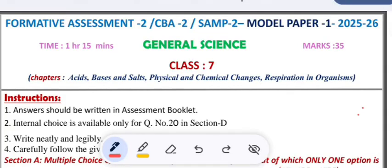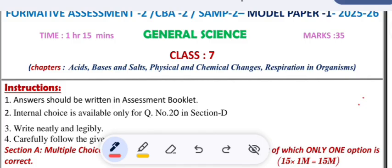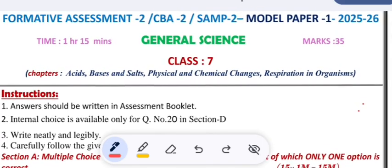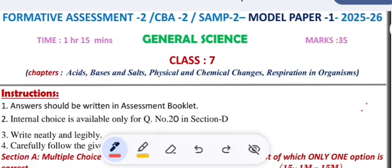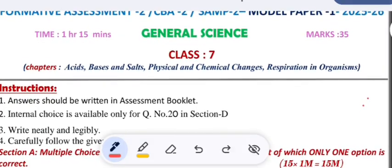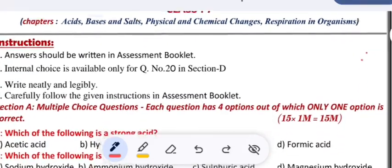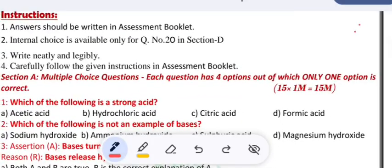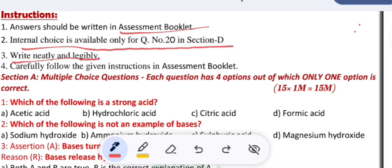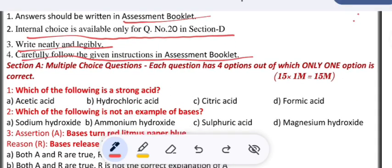Hello, welcome to my YouTube channel. Today's video is about formative assessment 2 question paper of class 7. We can have a clear look at this question paper. The subject is general science, maximum marks 35, time 1 hour 15 minutes. Instructions: answers should be written in the assessment booklet, internal choice is available only for question number 20 in section D.